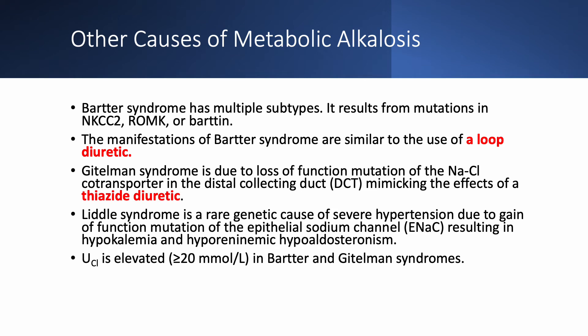Bartter syndrome is not very common. It has several subtypes due to mutations in the sodium-potassium-2-chloride exchanger, the ROMK channel, or the Barttin protein. It manifests like using a loop diuretic: metabolic alkalosis, normal blood pressure, and low potassium. Gitelman syndrome is due to a loss-of-function mutation in the sodium-chloride cotransporter in the distal collecting duct — similar effects to a thiazide diuretic, causing hypokalemia, hypomagnesemia, normal blood pressure, and metabolic alkalosis. In Gitelman syndrome, urine calcium is low (hypocalciuria), the opposite of Bartter syndrome, where urine calcium is normal or high.